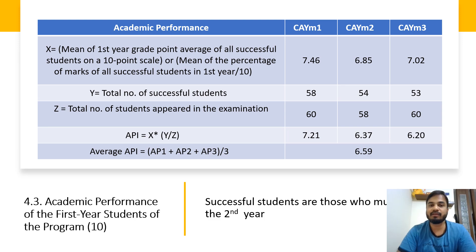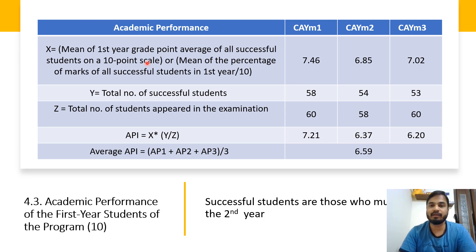The next aspect is academic performance of first year students (4.3), second year (4.4), and third year (4.5), each using the same formula and table structure. X is defined as the mean of the first year grade point average of all successful students on a 10-point scale. If it is a CGPA system, use the CGPA directly; if percentage-based, divide by 10 to convert. The average CGPA of all students I have considered is 7.46 on a scale of 10.